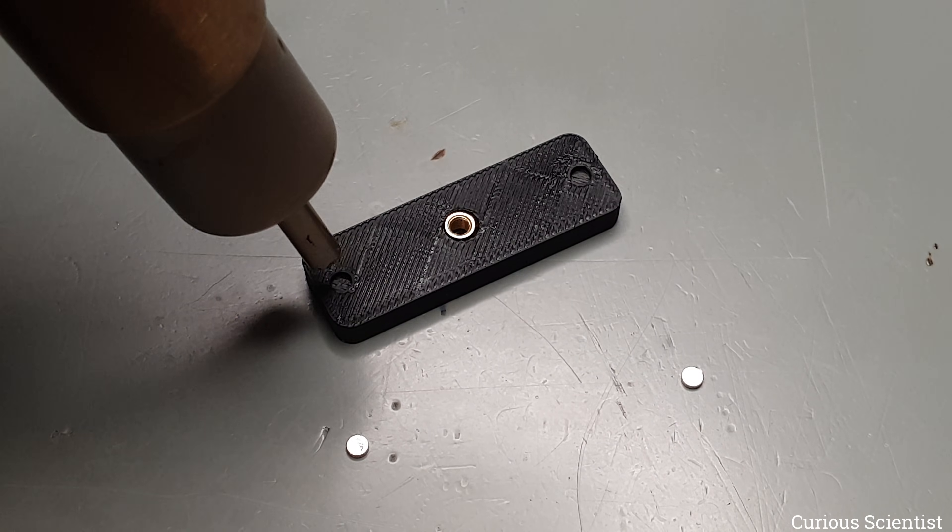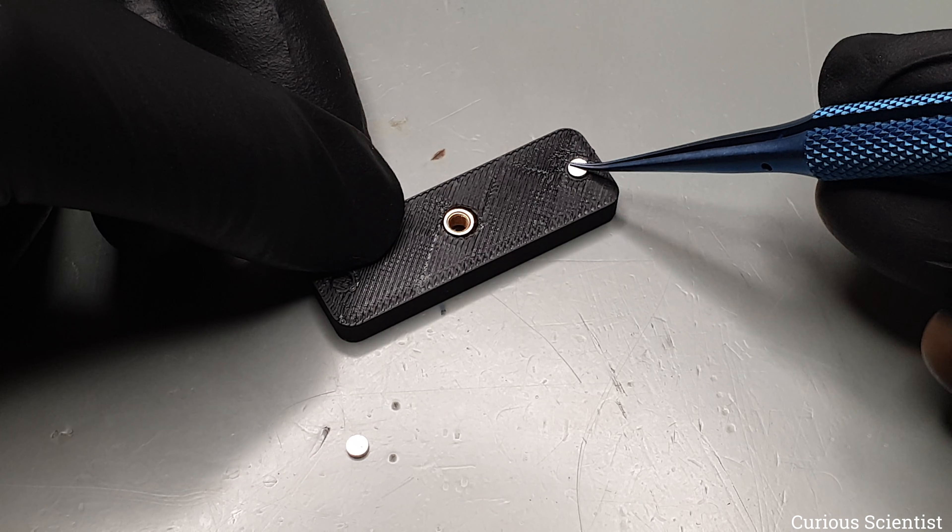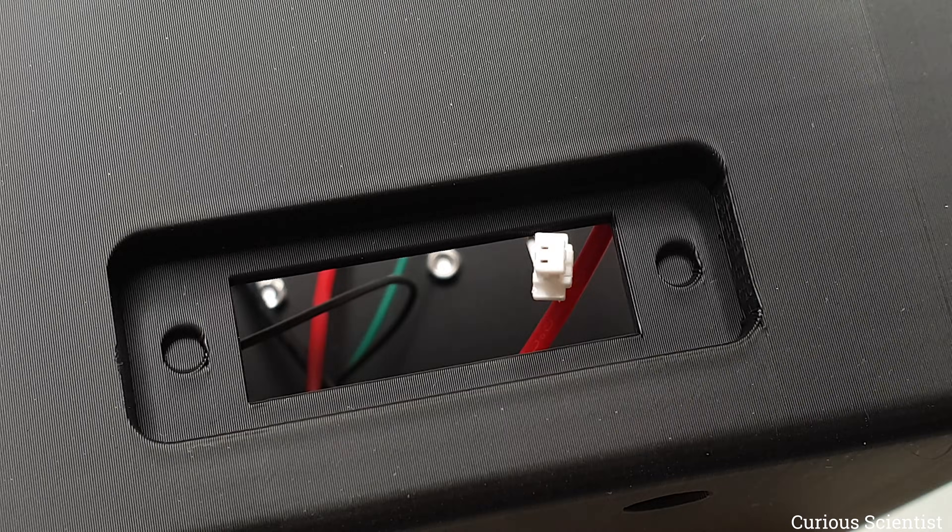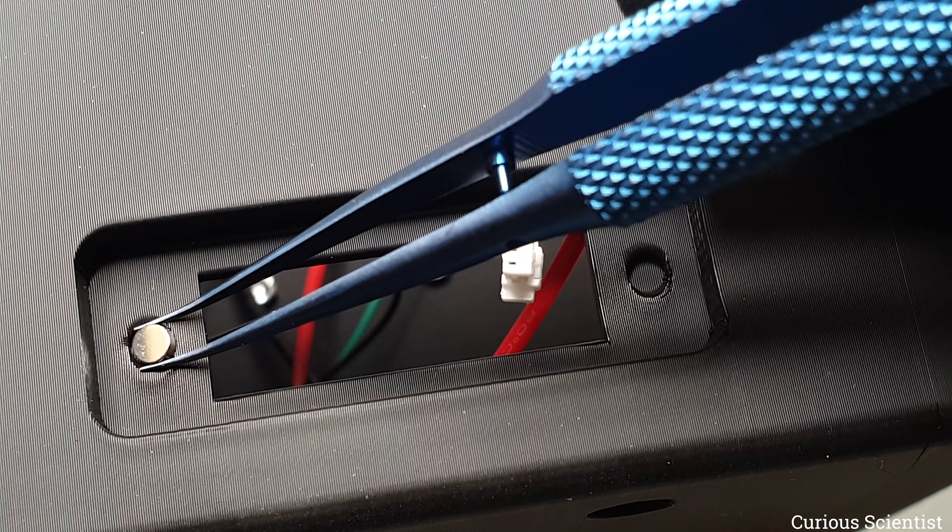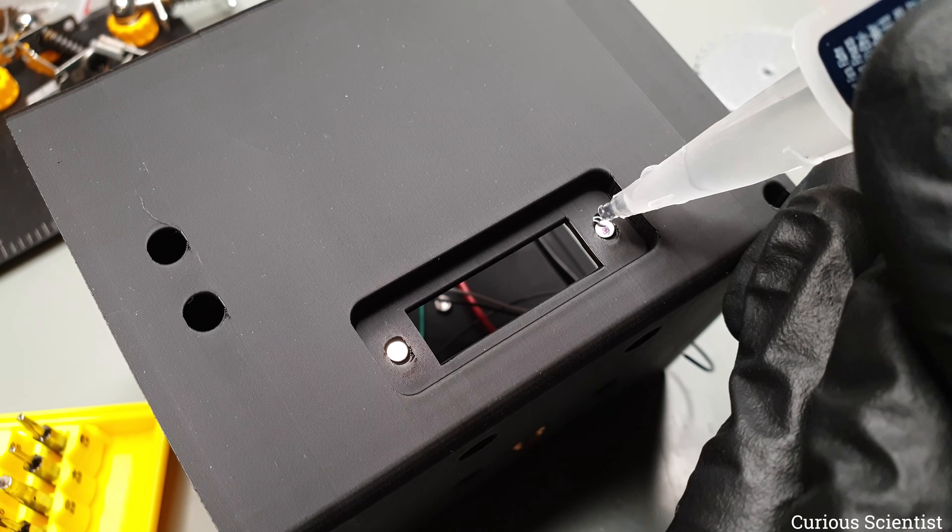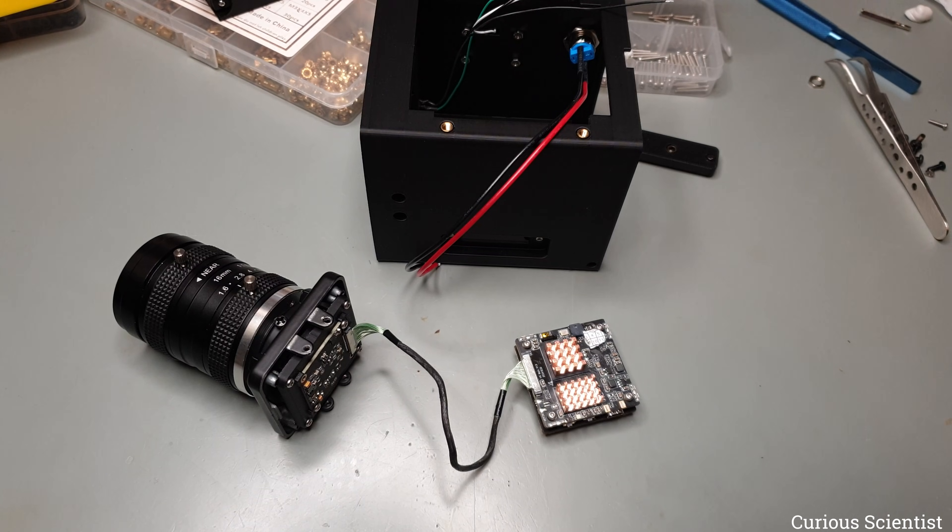I slightly heated the plastic, so the magnets would fit snugly into their holes. I had to use my titanium tweezers for this, since all my other tweezers are magnetic. Then I repeated the same process on the camera body, warmed it up slightly and pressed in the magnets. To make sure they wouldn't pop out, I added a few drops of super glue and let it cure.